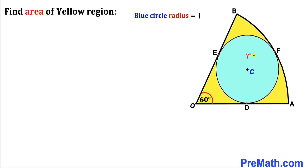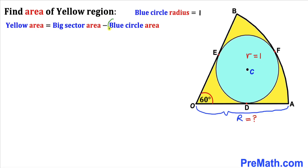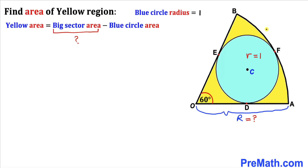The radius of this blue circle is 1. Since we are interested in calculating the area of the yellow region, we must calculate the radius of the sector — let's call it uppercase R. The yellow region area equals the big sector area minus the area of the blue circle, which is π centimeter square. So our job is to calculate the area of the big sector.